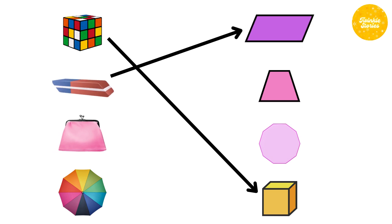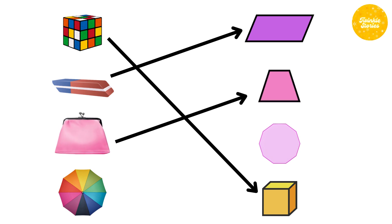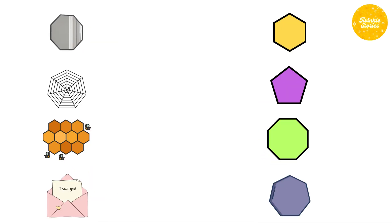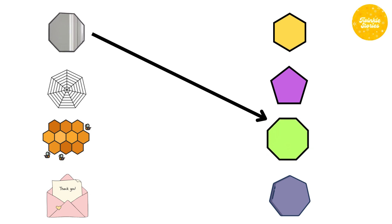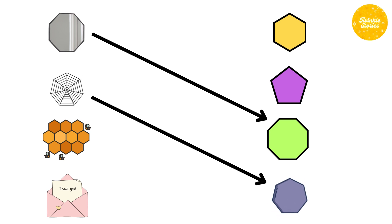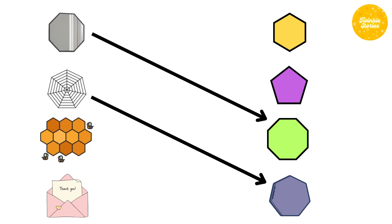Bag is the example for trapezium. Umbrella is the example for decagon. Mirror is the example for octagon. Spider web is the example for heptagon. Honeycomb is the example for hexagon.